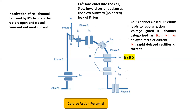In phase 3, the voltage-gated potassium channel opens, resulting in a potassium ion outward current efflux that leads to membrane repolarization. The voltage-gated potassium channels in phase 3 are categorized as IKUR, IKR, and IKS — they are delayed rectifier currents. HERG is related to IKR, the rapid delayed rectifier potassium channel, and plays an important role at the voltage-gated potassium channel in phase 3.